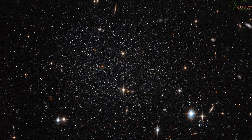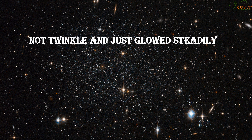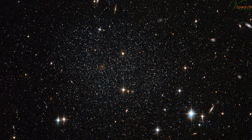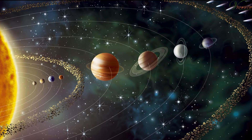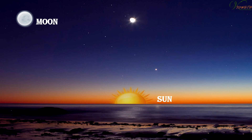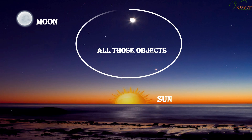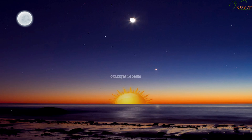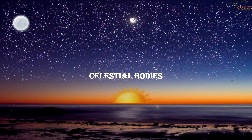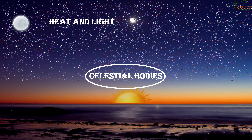Some stars in ancient times did not twinkle and just glowed steadily. These celestial bodies are called wandering stars. Today, we recognize these bodies as planets. The Sun, the moon, and all those objects shining in the night sky are called celestial bodies. Those that have their own heat and light, which they emit in large amounts, are called stars.